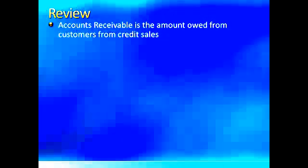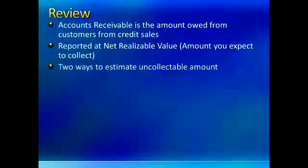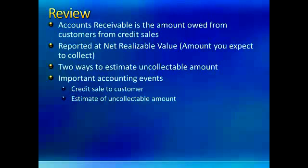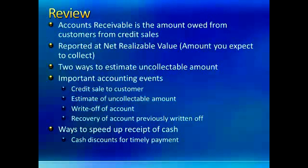In review, accounts receivable is the amount owed from customers from credit sales and should be reported at net realizable value — the amount you expect to collect. There are two ways to estimate the uncollectable amount: the balance sheet approach and the income statement approach. Important accounting events include credit sales to customers, estimating uncollectable accounts, writing off an account, and recovery of a previously written-off account. Ways to speed up receipt of cash include offering cash discounts for timely payment and factoring accounts receivable.